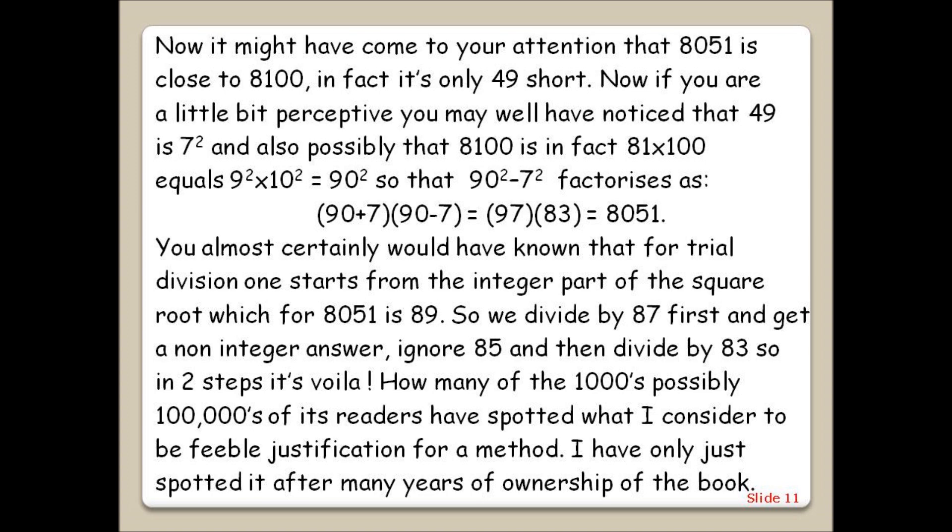You almost certainly would have known that for trial division, one starts from the integer part of the square root, which for 8051 is 89. So we divide by 87 first and get a non-integer answer, ignore 85, and then divide by 83. So in two steps, it's voila!